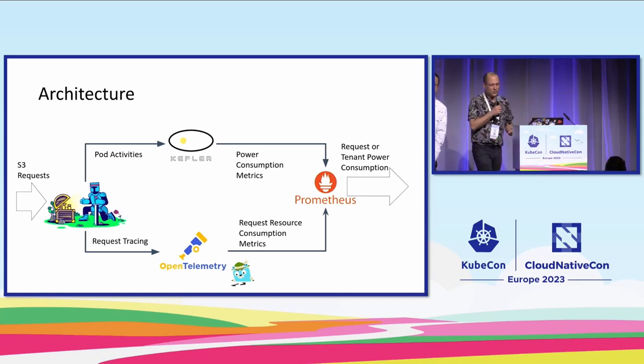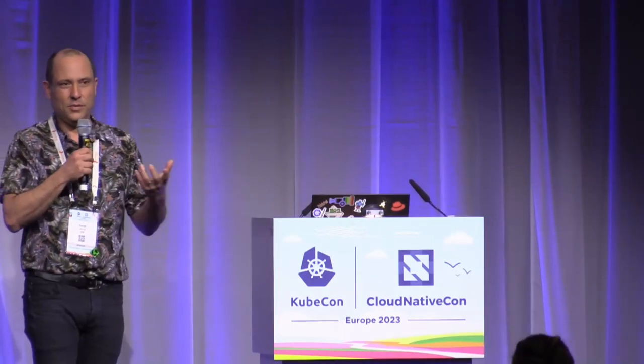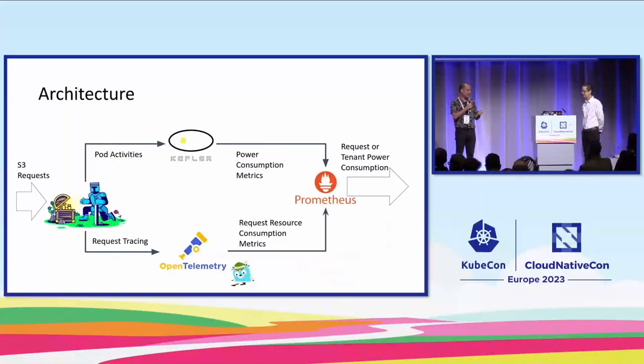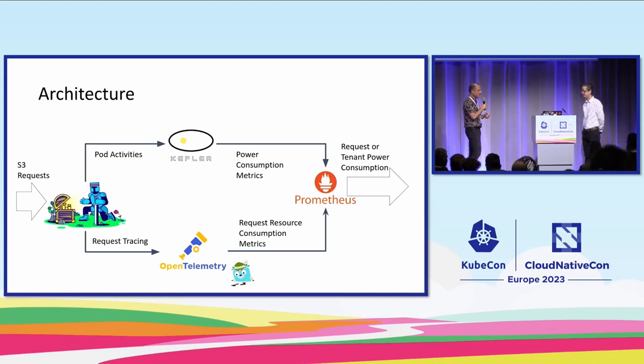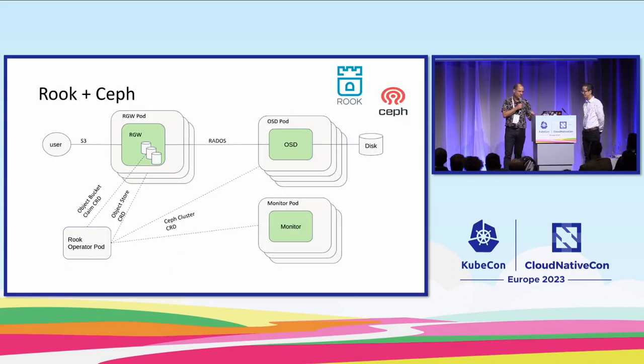Now we know what we want to achieve and what our goals are. Our example uses cloud storage — we use Rook to set up the Ceph cluster. The other technologies are Kepler, which measures energy consumption of different pods in our system, and OpenTelemetry with Jaeger for end-to-end tracing. Everything funnels up to Prometheus, where we do the calculation and show the outcomes.